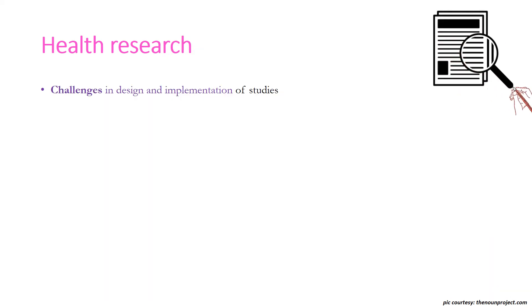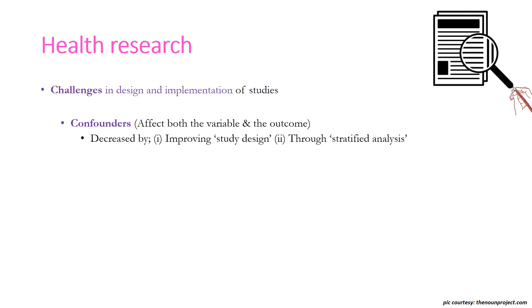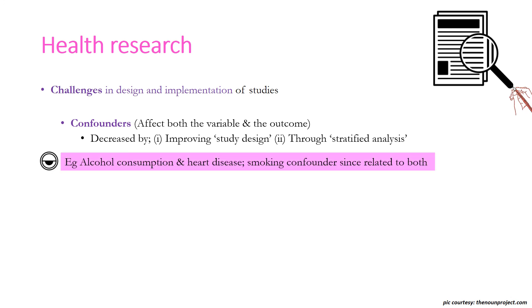There are certain challenges in the design and implementation of studies. The first is confounders, which affect both the variable and the outcome and are reduced by improving study design and through stratified analysis. Confounding means confusing — for example, if we study the effect of alcohol consumption on heart disease, smoking becomes a confounding factor because most alcoholics also smoke, and smoking alone increases the risk of coronary artery disease. In such patients we cannot definitively conclude whether it is alcohol or smoking causing heart disease.